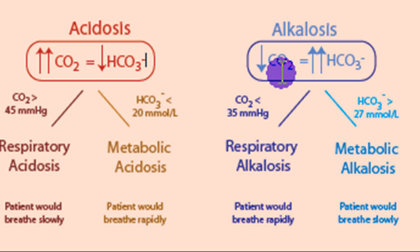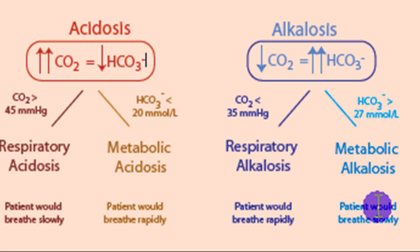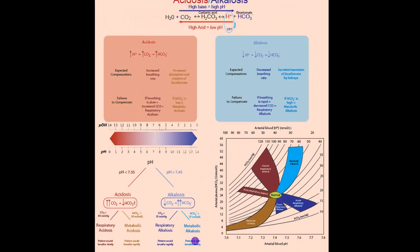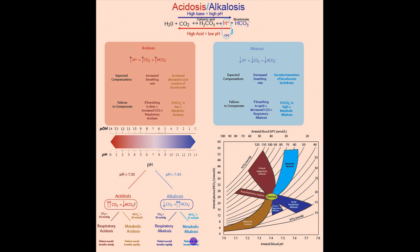In alkalosis, we expect low CO2, so we'd expect the patient to breathe slowly to retain CO2. If the patient is breathing rapidly during alkalosis, the respiratory system is not doing what it's supposed to do — this is respiratory alkalosis. If the patient is breathing slowly during alkalosis, the respiratory system is doing its job, trying to retain CO2 to increase acid via the buffer system. Since the problem is coming from somewhere else, this must be metabolic alkalosis.